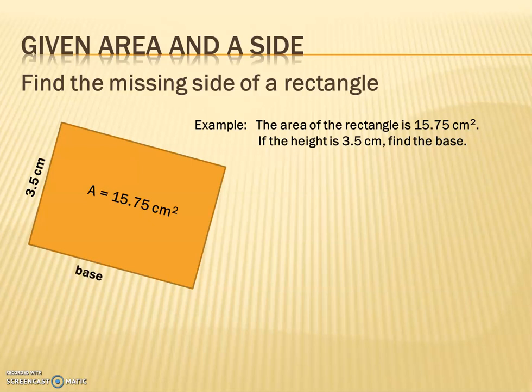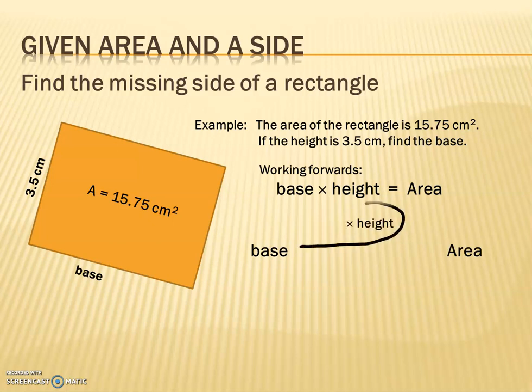So first we'll label the area in there and the height, and we're looking for the base. Now remember these are interchangeable. I could give you the base and you could find the height or vice versa. So the formula we know is base times height equals the area. So working from the base to the area, you would basically go base, take the roller coaster, multiply by the height to get the area.